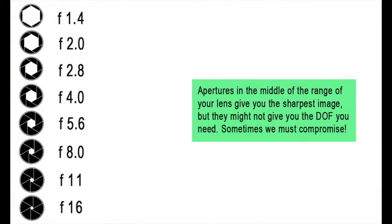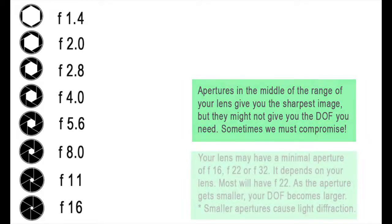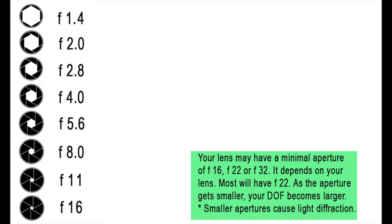Here's a little secret about lenses. The aperture in the middle of the range gives the sharpest image. If we look at the same lens again, you'll see that the best possible focus is either at f4 or f5.6. With a lens that has a range from f2.8 to f22, the sharpest aperture would be f8. With the tiniest apertures, you'll get light diffraction — that just means light scatters in all directions. So as your aperture gets smaller, your images won't be tack sharp. I rarely use f32.